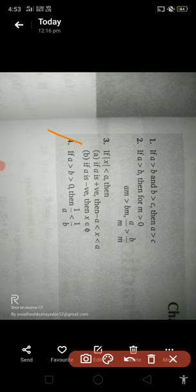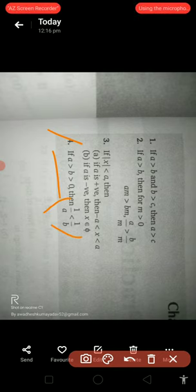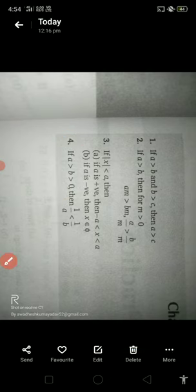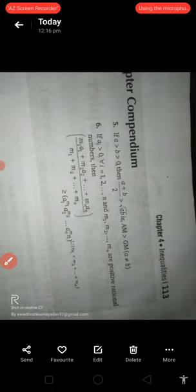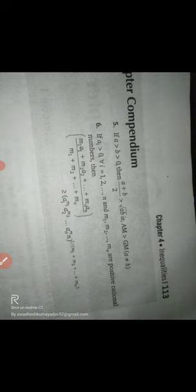The fourth property is if a greater than b and b greater than 0, then a plus b divided by 2 greater than square root of ab. The arithmetic mean is greater than the geometric mean when they are not equal.